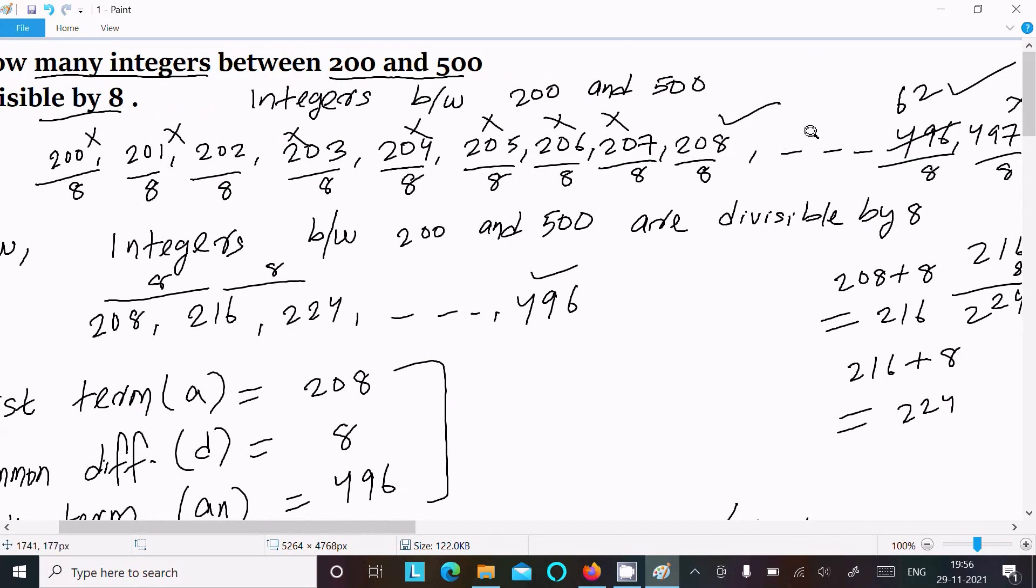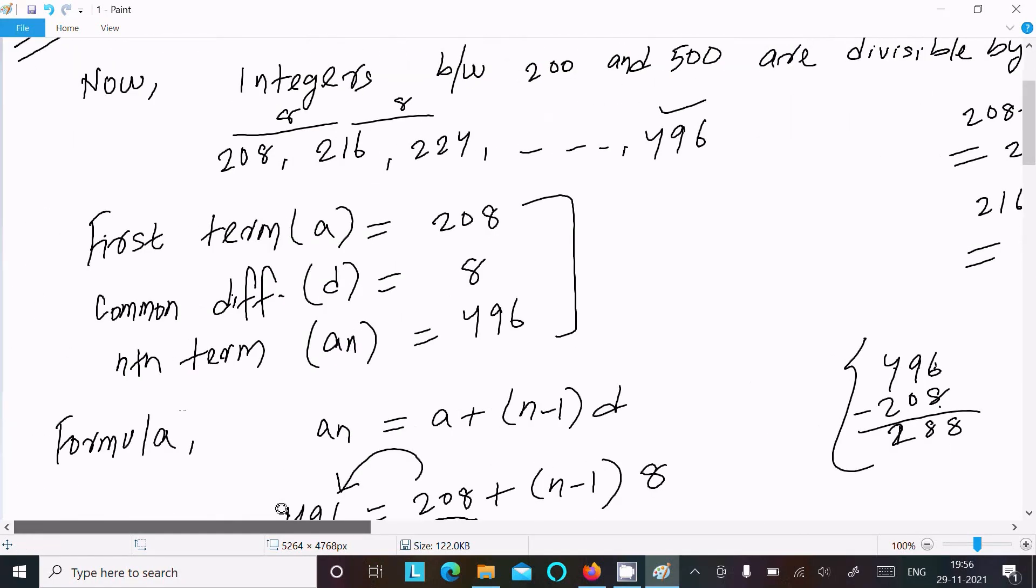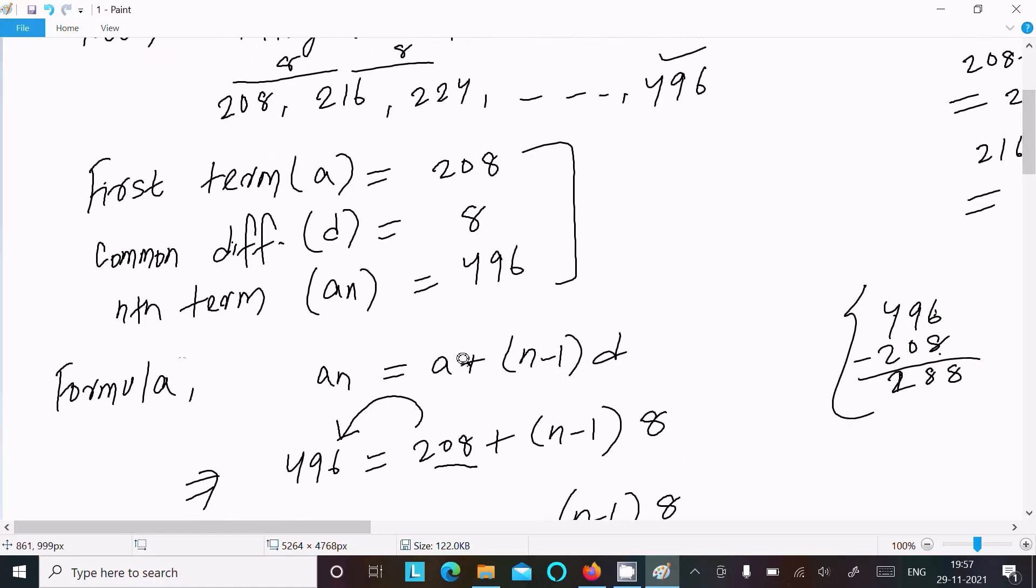After that, no need to check further, just add 8 by 8. So the next divisible is 216, 224. And here 497, from here we can easily identify a, d, an.